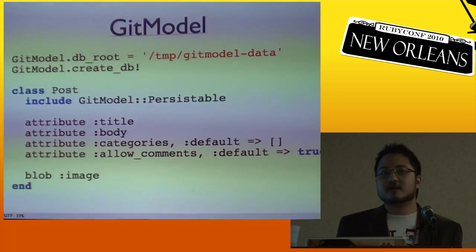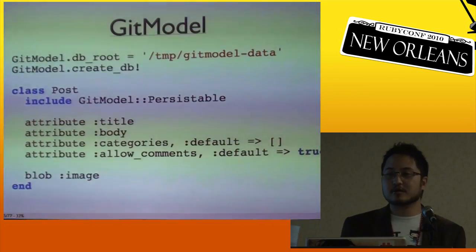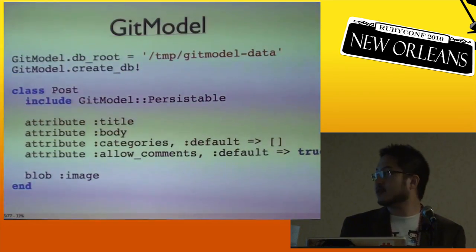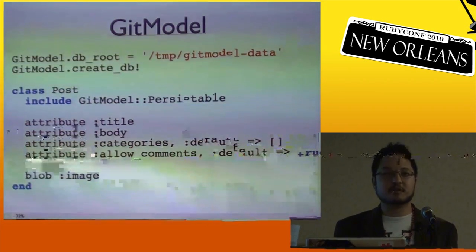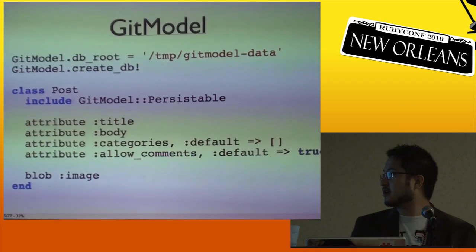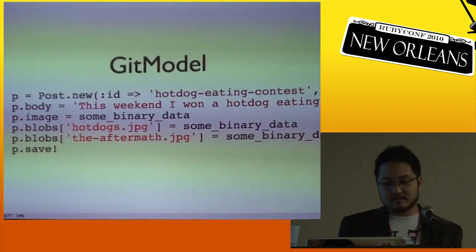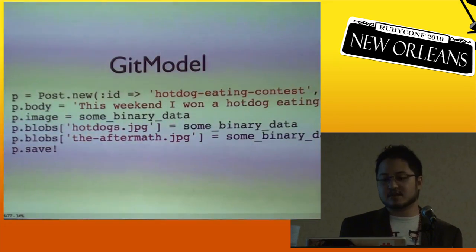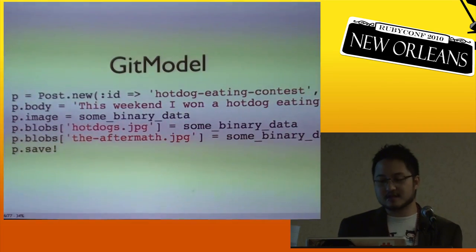This is a project that Paul Dauman showed me about a week ago. It's an ActiveModel-compliant adapter for Git, and it uses Grit internally. You can see we're creating a model that looks just like an ActiveRecord model, except you're defining various properties and blobs. You can access it like an ActiveRecord model, and it basically just stores JSON files in the Git database. You can also reference other blobs and images and things like that.